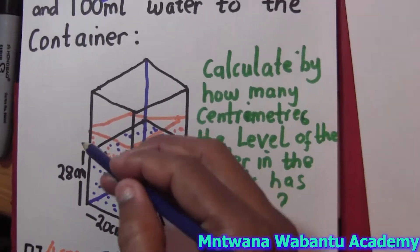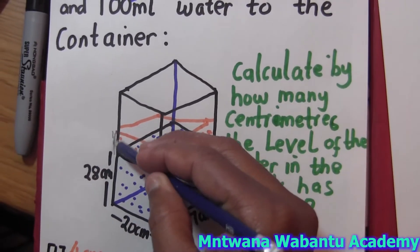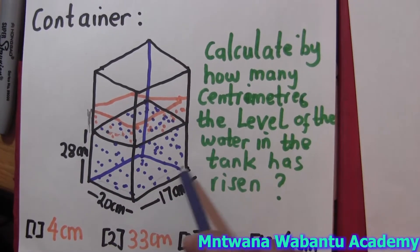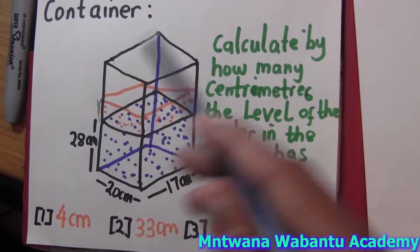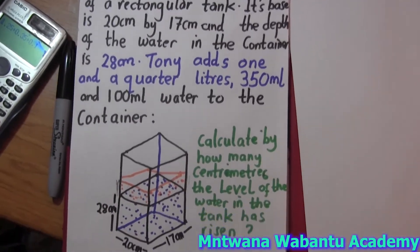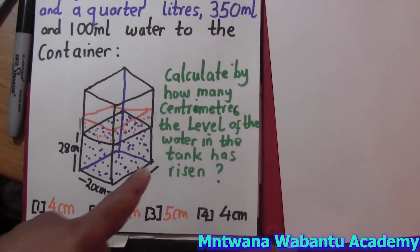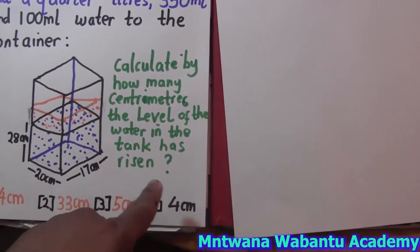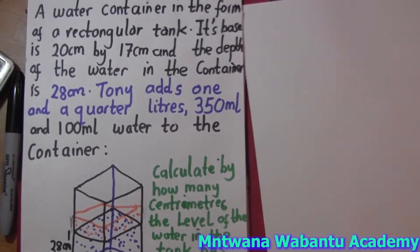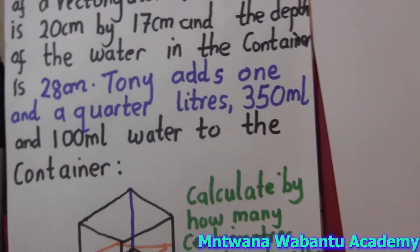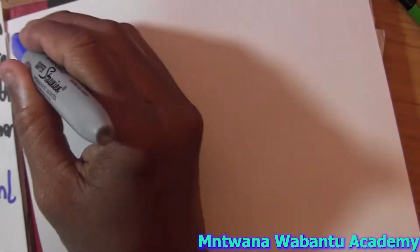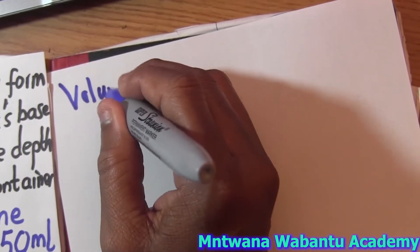We don't know the new height — the height which is increasing. But we know this length is going to stay the same at 20, and this width is going to be 17. We don't know the height, which is going to increase. First and foremost, let me find the volume of the new water added. So let's add all those volumes — volume added.